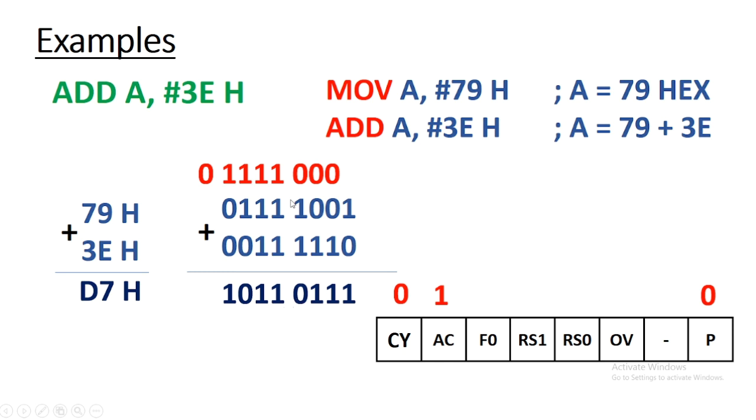That's why auxiliary carry flag is 1, and parity flag is 0, because there are an even number of 1s in the accumulator. So parity flag is 0.